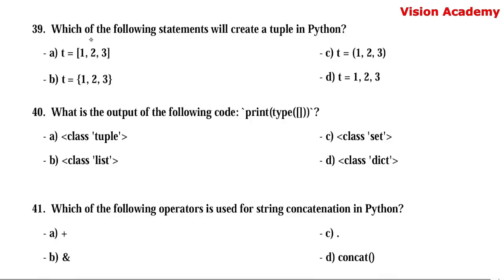Question number 39. Which of the following statements will create a tuple in Python? Option A: t = [1, 2, 3] (square brackets). Option B: t = {1, 2, 3} (curly braces). Option C: t = (1, 2, 3) (round braces/parentheses). Option D: t = 1, 2, 3. Here, option C — t = (1, 2, 3) in round braces — creates a tuple in Python.